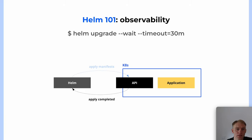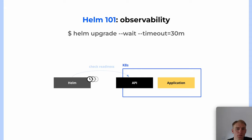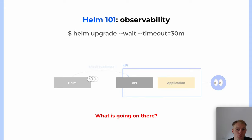And in the last example — we apply manifests, we wait, and we don't know what's happening with our application. We have to go to the cluster and check the status ourselves. Helm does not show any logs, and we should track it ourselves.